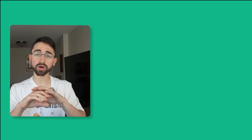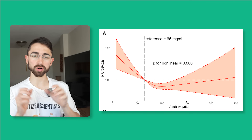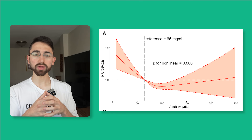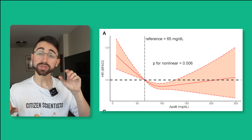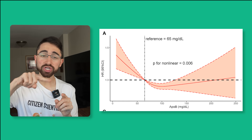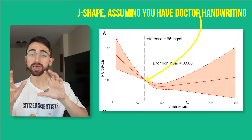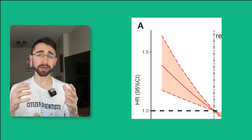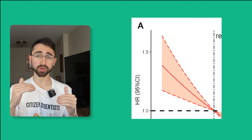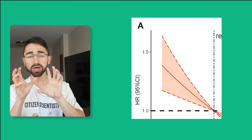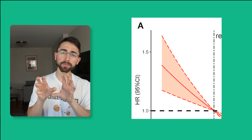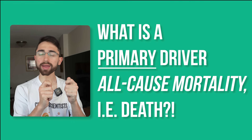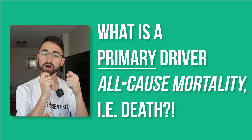There is controversy over the relationship between ApoB — and by extension LDL — and all-cause mortality, or death by any cause. Some people note a J-shaped relationship between ApoB and all-cause mortality, whereby very low levels of ApoB might not necessarily be better, because you see very low levels associated with higher all-cause mortality. But to appreciate whether this may or may not be a fair conclusion, we have to ask another question: what is the primary driver or primary predictor of all-cause mortality?